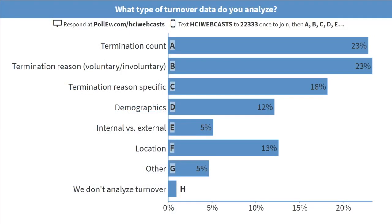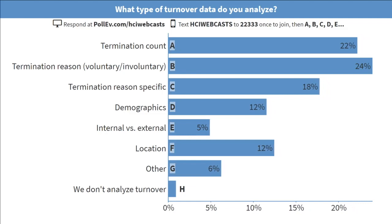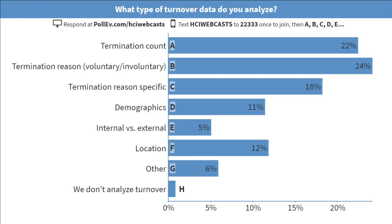It's looking like the majority of people are really focused on that termination count and more of a categorical reason — voluntary/involuntary most likely. As we begin to consolidate our HRIS systems and different data systems, we're starting to see those come together a little bit more, which will really help in understanding and utilizing this data better. It helps you paint a stronger picture because each system is more integrated, allowing for a unified understanding of turnover. What would you recommend people think about as they're collecting turnover data?